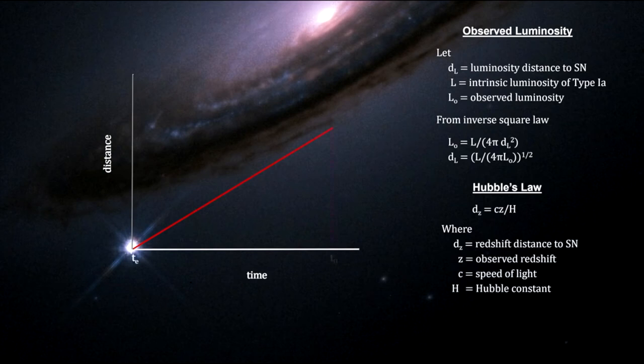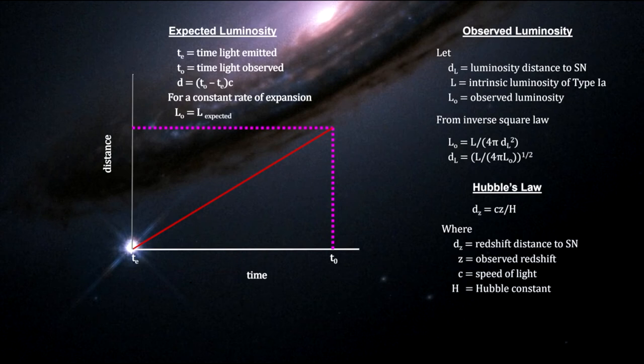If the expansion rate is constant, the luminosity distance and the redshift distance will be the same.